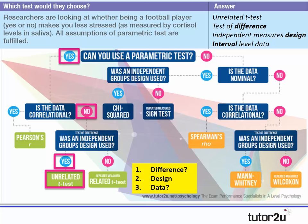Students might come up with a different answer — they might say Pearson's R, because they're looking at a correlation between football players and their level of stress. It would potentially be possible to do a Pearson's R in this case, and as long as they justify it correctly, in this made-up scenario it's the justification that we're after.